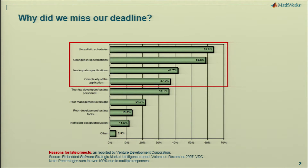Some data to go with you — this is from a Venture Development Corporation — some information about how the various things cause people to miss their deadlines: unrealistic schedules, overly complex systems, changes to the specification as you go. All byproducts of not doing good system engineering and development against the requirements as you go — all things that model-based design helps take care of early in the process.